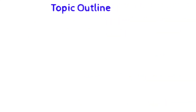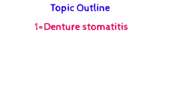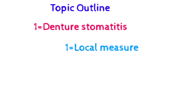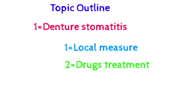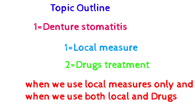This is Part 2. Today's topic outline is denture stomatitis. In Part 1, we studied pseudomembranous and other types of oral candidiasis. Today we will study denture stomatitis, covering first local measures, and second drug treatment. The key question is: when do we use local measures only, and when do we use both local measures and drugs?